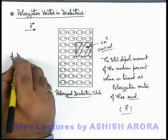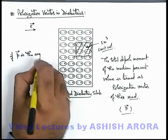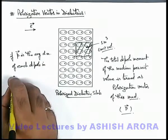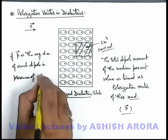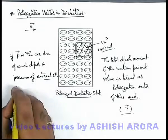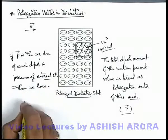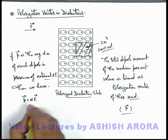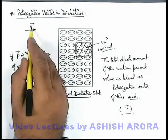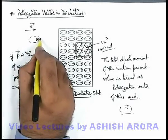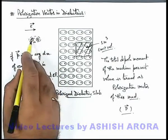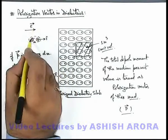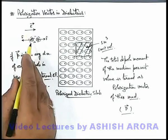We know if small p-vector is the average dipole moment of each dipole in presence of an external electric field, then we can say that this P-vector is directly proportional to the external electric field, or P-vector can be written as alpha times E-vector, where alpha is a proportionality constant. Due to this electric field, when an atom gets distorted, its negative center is displaced from the positive center — a positive nucleus experiences a force in the direction of the electric field.